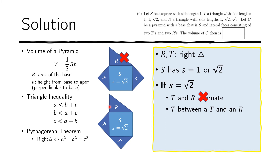The other sides would be 1 and 1. Therefore for R, this side should be 1 so that they could close properly. This side is square root of 2, and therefore this other side should be square root of 3. The other R could only look like this: the square root of 3 here matches with the square root of 3 here, and the 1 here matches with the 1 here.